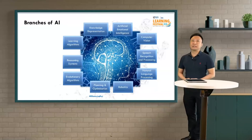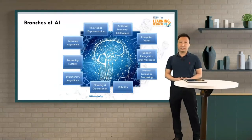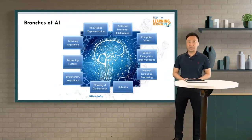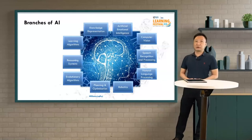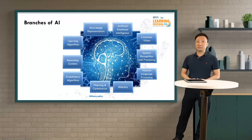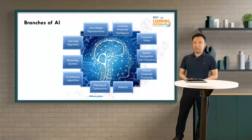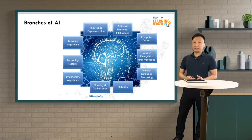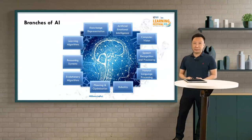We also have other branches of AI, for example robotics, planning and optimization, evolutionary algorithms, reasoning systems, learning algorithms, knowledge representation, and also artificial emotional intelligence. For artificial emotional intelligence, it's about teaching AI how to read human emotions — things like whether the AI is able to understand that a human is happy, sad, or angry.